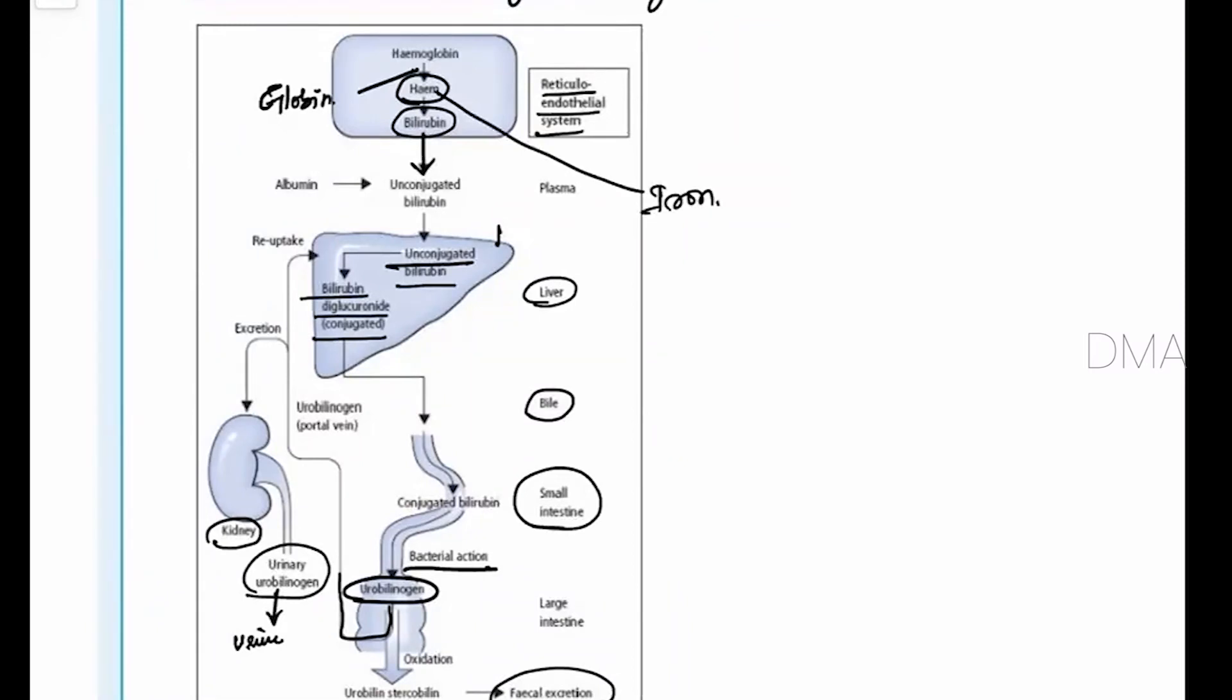What happens to this? This will join with the transferrin. And this transferrin with the heme, they will go to the liver and it has been stored as ferritin.